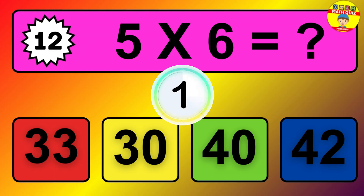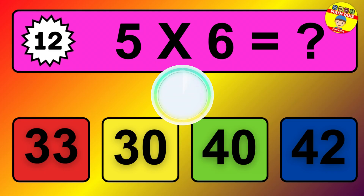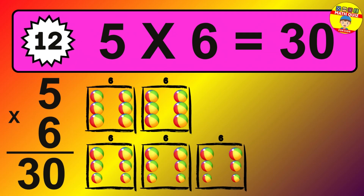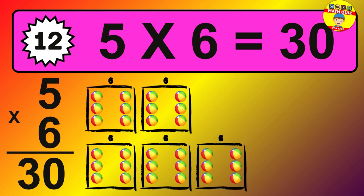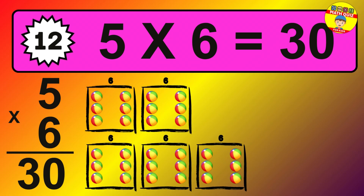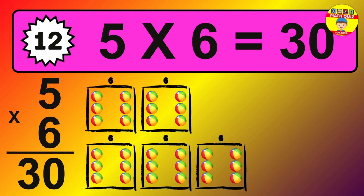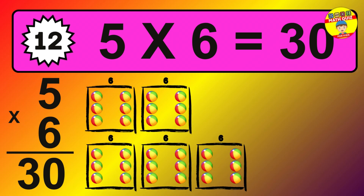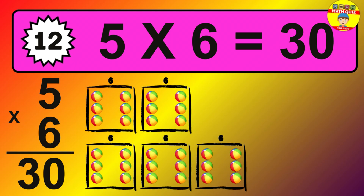Question 12. 5 times 6 equals what? The answer is 5 times 6 is 30. To calculate, we have 5 groups with 6 balls each one. So, how many balls do we have? 30 balls.